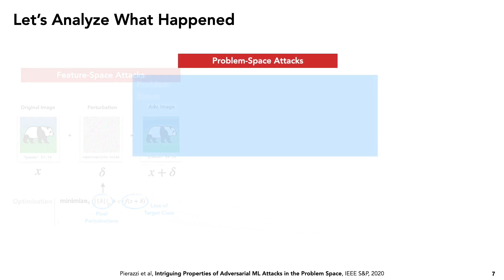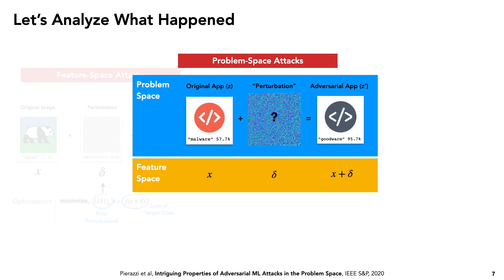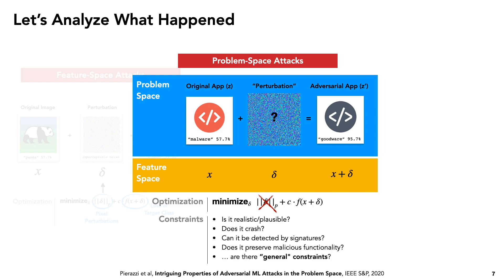Consider a problem space attack in which the feature space and problem space are very different. Here, in the problem space we have some malicious application, and in the feature space we have a corresponding feature vector embedding. Following the feature space attack, we add some perturbation — for example by adding some API calls or strings — to obtain an adversarial variant that gets classified as benign. In this setting, you don't necessarily care how many features you modify; instead you have many other constraints: Is the new application realistic? Does it still work? Can the changes be truly detected? Is it still malicious?